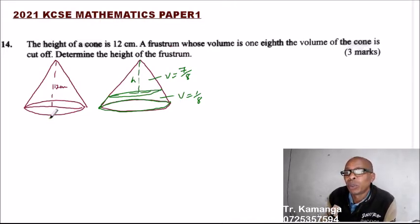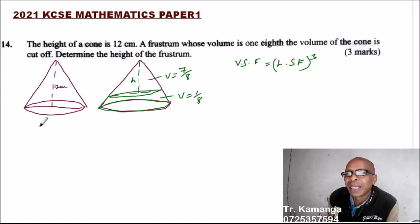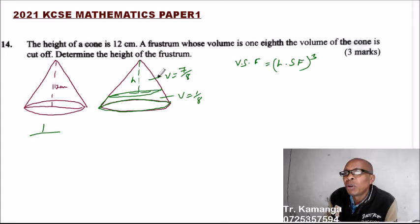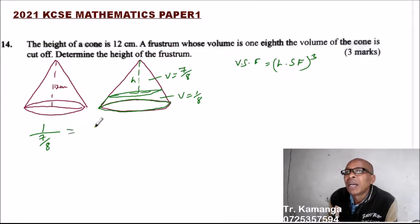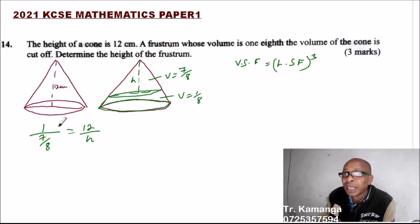Now we have the volume of the full cone. We know the volume scale factor. Volume scale factor is equal to linear scale factor cubed — you learned that. So if we say the volume of the full cone is 1, divided by the volume of the small cone which is 7/8, that equals the height of the big cone, 12, divided by the height of the small cone, cubed.